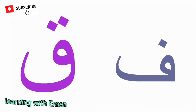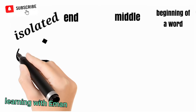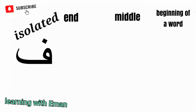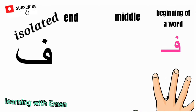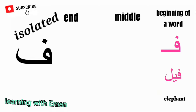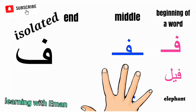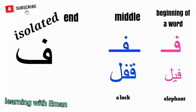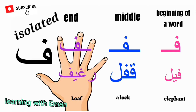The next letters of the Arabic alphabet are Fa and Qaf. Fa and Qaf look very similar except that Fa has one dot and Qaf has two dots on top. Fa is equivalent to the English letter F. At the beginning of a word, like 'Fiil', meaning elephant. At the middle of a word, like 'Qifl', meaning a lock. At the end of a word, like 'Rghif', meaning loaf.